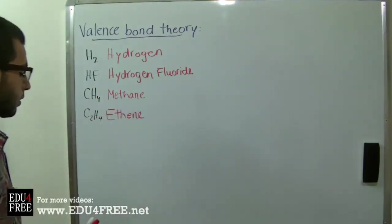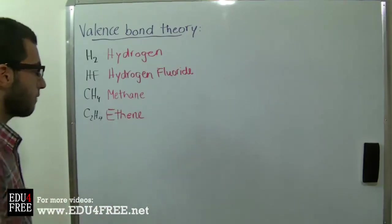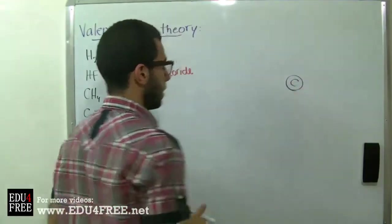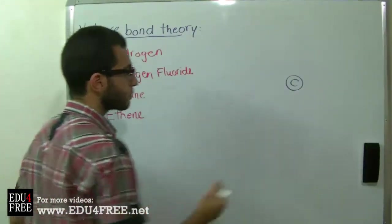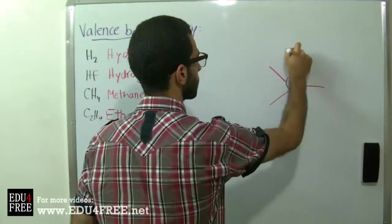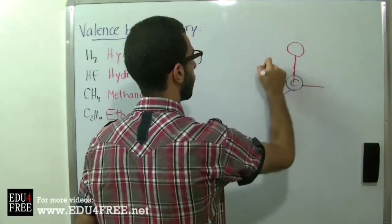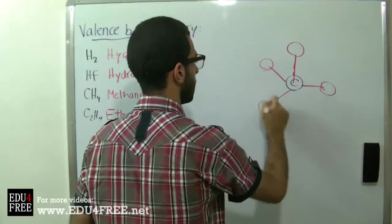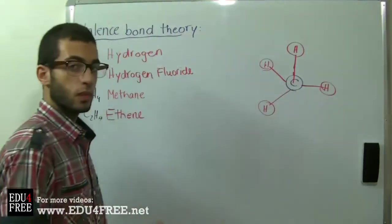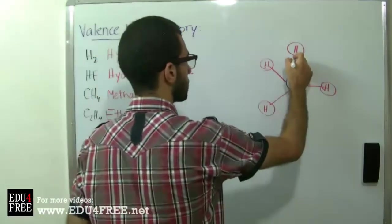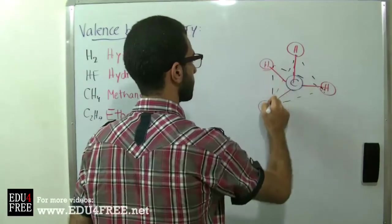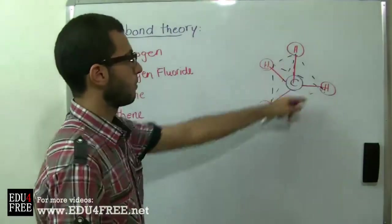Now let's move to a more complex molecule: the methane molecule. In the methane molecule we have a carbon atom and four hydrogen atoms arranged in the shape of a tetrahedron. A tetrahedron is a pyramid, so the shape of the molecule looks like a pyramid.